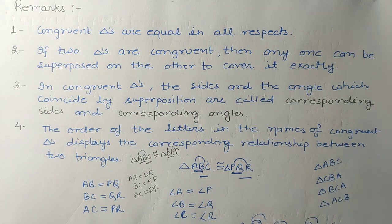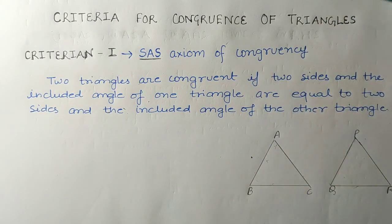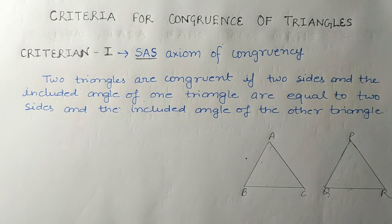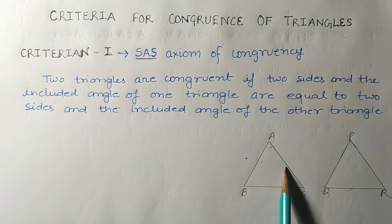Now we are going to study the criteria for congruence of triangles. First, you need to understand why we study this topic. If two triangles exist — triangle ABC and triangle PQR — each has six components: three sides and three angles.